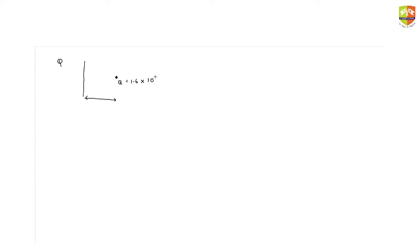Yes sir. So we have a small plate having work function phi, which is kept at a distance d from a singly ionized fixed ion. Singly ionized means its charge is the charge of an electron — so this is a positive charge kept at a distance d from a metal surface having work function phi. A monochromatic light beam is incident on the metal plate, so photons are hitting this plate. Find the maximum wavelength of the light used so that some of the photoelectrons may go round the ion along the circle.